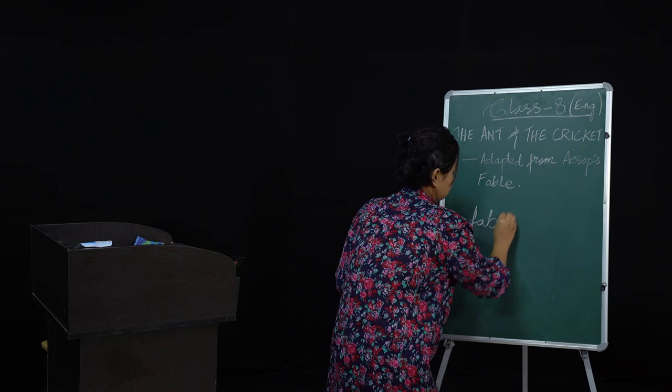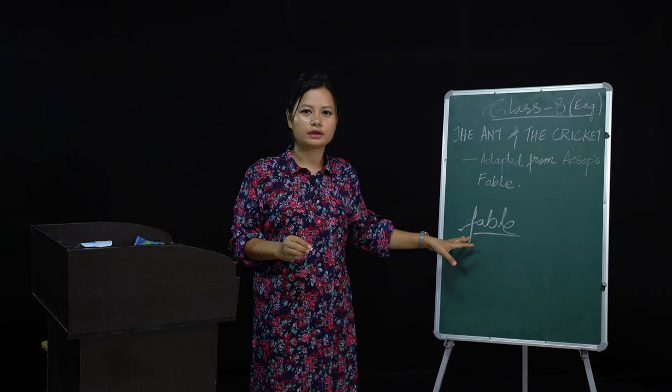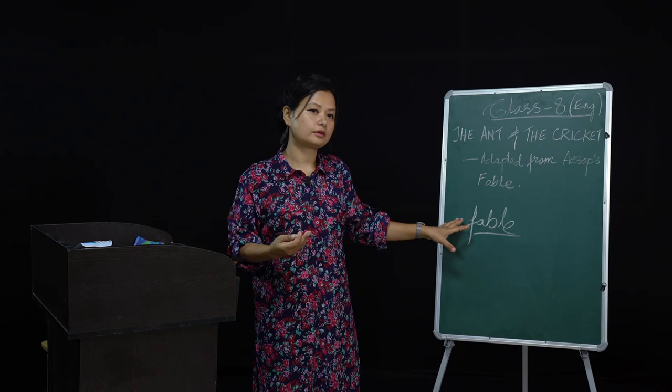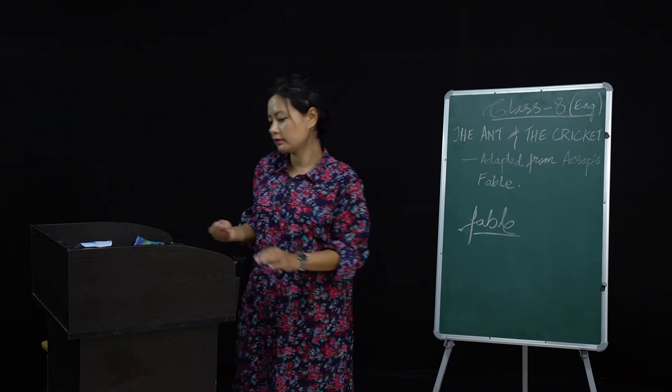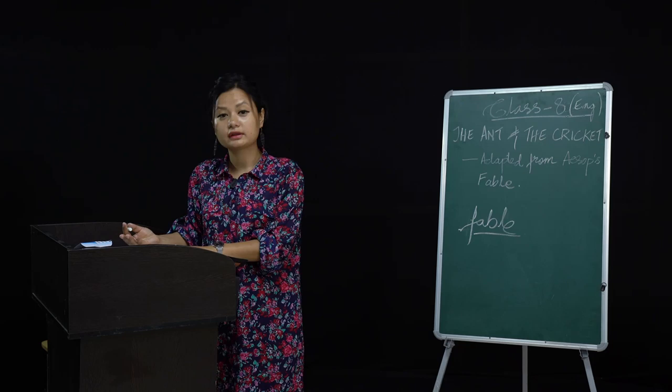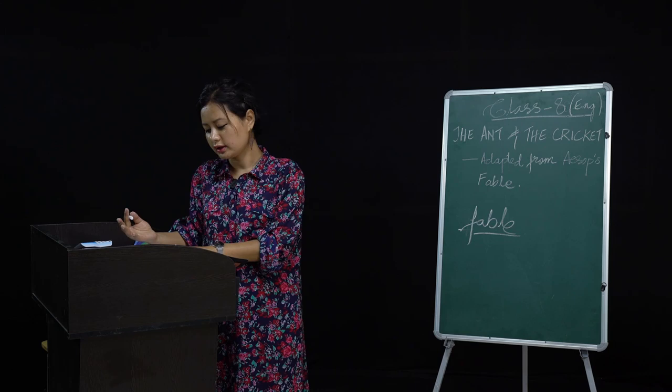When I say fable, a fable is a poem or a story where most of the characters — or sometimes all of the characters — are animals. That is known as a fable. So here in this poem, this is a fable because the ant and the cricket, they are animals. That's why the main characters in the poem are animals, and that is why this is a fable.